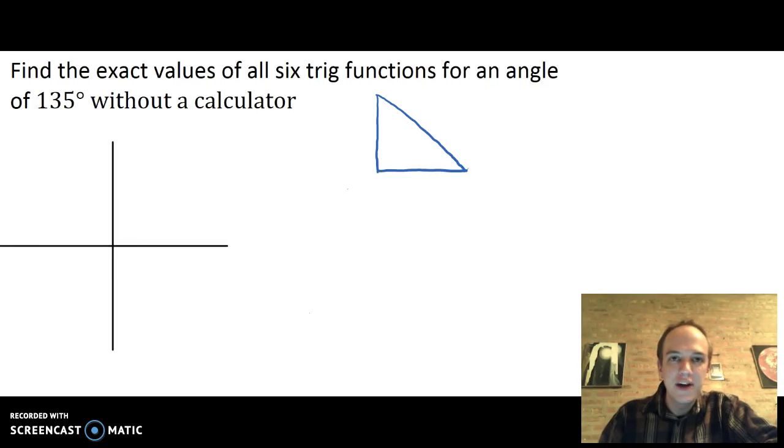Hey there, welcome back. Now let's talk about what you do if you have an angle and it's a multiple of 45 or 30 or 60, but you don't have any side lengths. You can still find all the trig values and you can even find them exactly. Here's how.